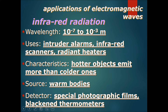Now it's reaching a range that we can actually imagine quite well, because 10 to the power of minus 3 meters is actually just 1 mm, which is visible on your ruler. Uses of infrared radiation are intruder alarms, infrared scanners, or radiant heaters.